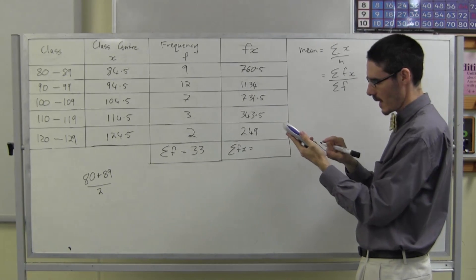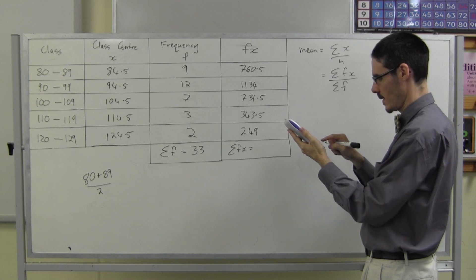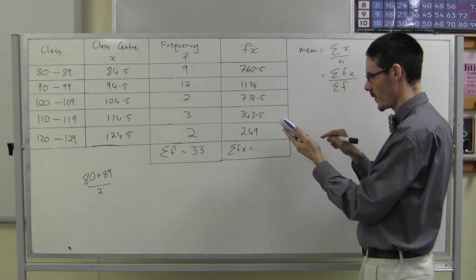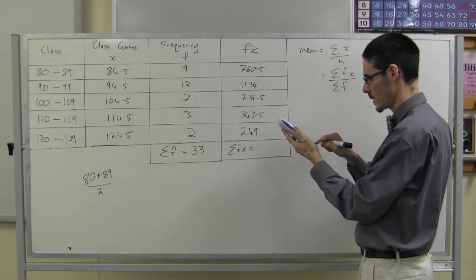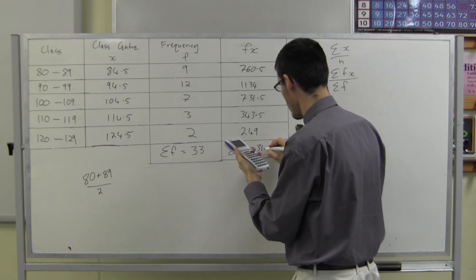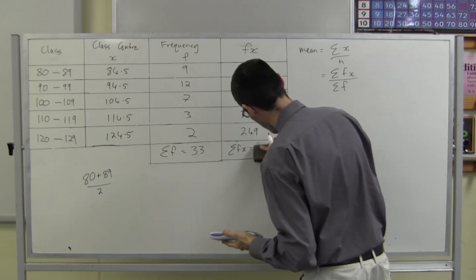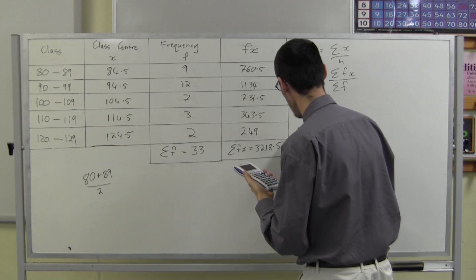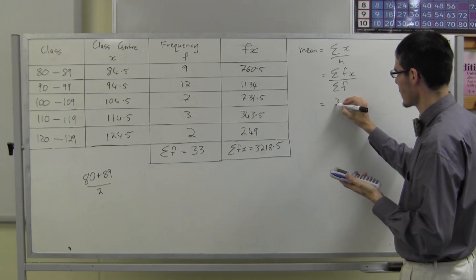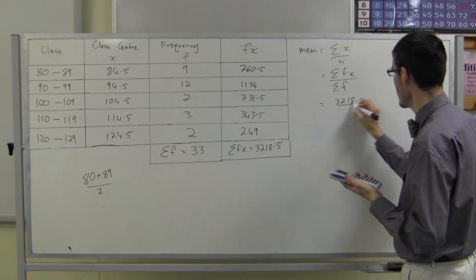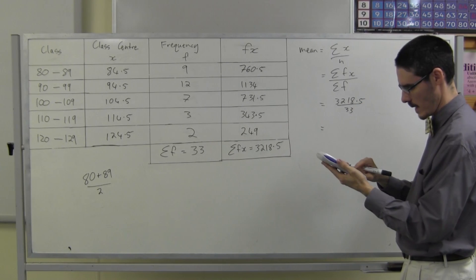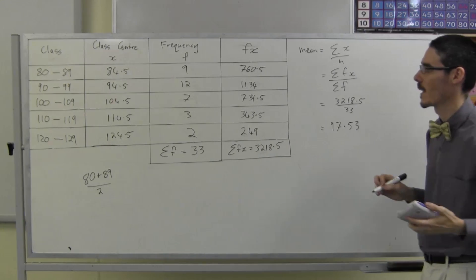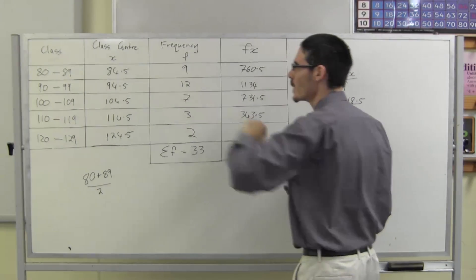Let's work out the mean. Frequency times score: 9 times 84.5 is 760.5. 12 times 94.5 is 1134. 7 times 104.5 is 731.5. 3 lots of 114.5 is 343.5. And 2 lots of 124.5 is 249. Adding those up: 760.5 plus 1134 plus 731.5 plus 343.5 plus 249 gives 3218.5. So my mean is 3218.5 divided by 33, which is 97.53. That sounds like a reasonable mean for this data.